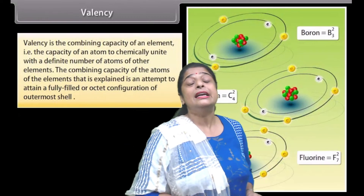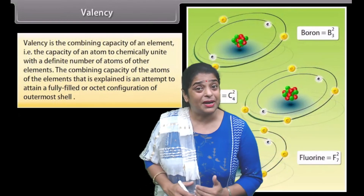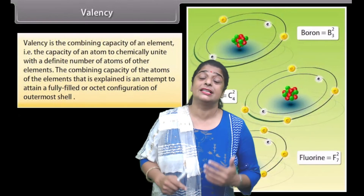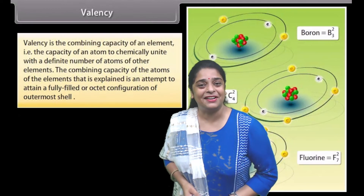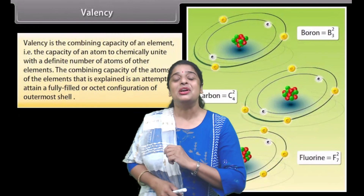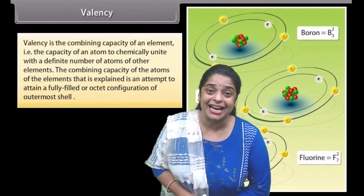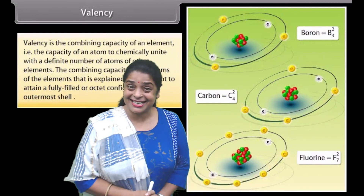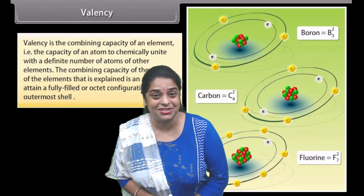This is how we distribute electrons in shells — what we call electronic configuration. For homework, make a list of elements from atomic number 1 to 18 and write down the electronic configuration of each. I will be there to help you with this homework. Looking forward to seeing you in the next class, where I will be discussing valency. Goodbye, my dear students!